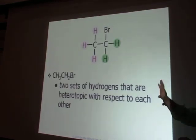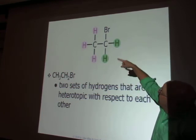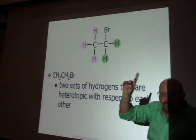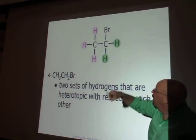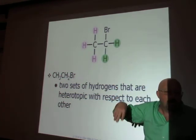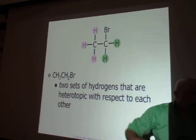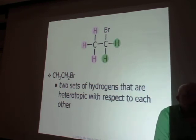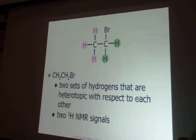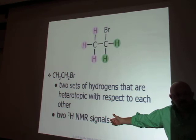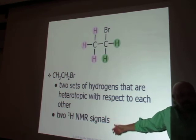You can see with the colored labeling: the three purple ones are equivalent and will give one signal. The two green ones are equivalent and give one signal. But the green is different than the purple. So bromoethane will have two NMR signals because we have two different kinds of hydrogens.